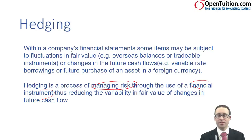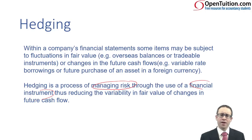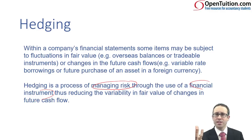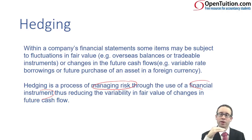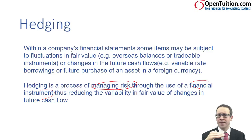By entering into this financial instrument, hopefully that should mitigate any gains and losses that you have on your item. It reduces the variability. So if the fair value changes on your item and you make a gain, the way in which hedging should work is that the instrument should generate you a loss — hopefully an equal loss. And as you net off the gains and losses, that will fix the price. That's what we're trying to aim for — to reduce the risk by fixing the price in the future or fixing the price today. That is the aim. That's what hedging is.